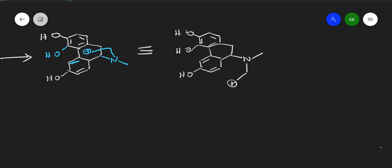Since H⁺ is in excess in acidic conditions, the oxygen lone pair attacks the electrophilic carbon, giving the oxygen a positive charge. This oxygen then leaves as a water molecule (−H₂O), generating a carbocation. An adjacent hydrogen is then removed so the ring becomes aromatic — a simple shifting of the ring to give an aromatic product.